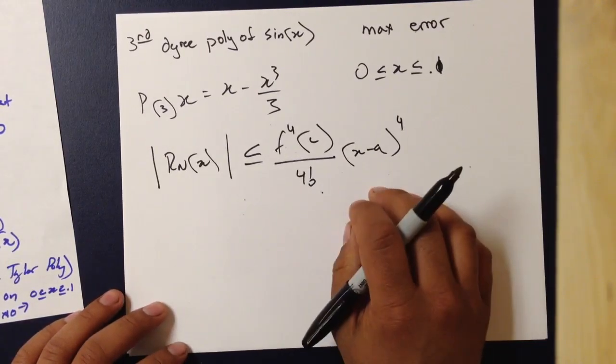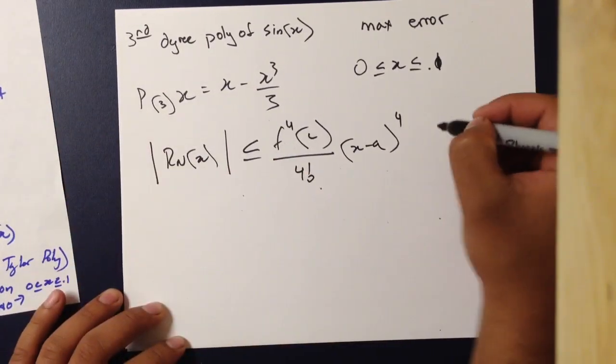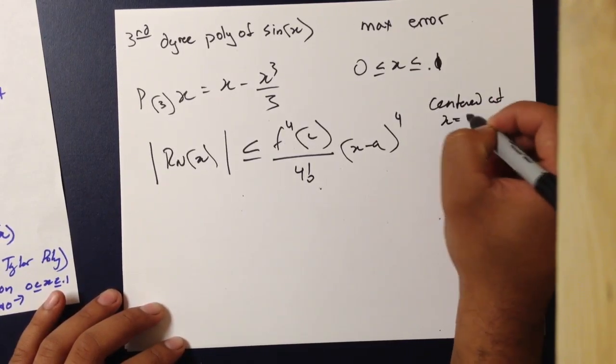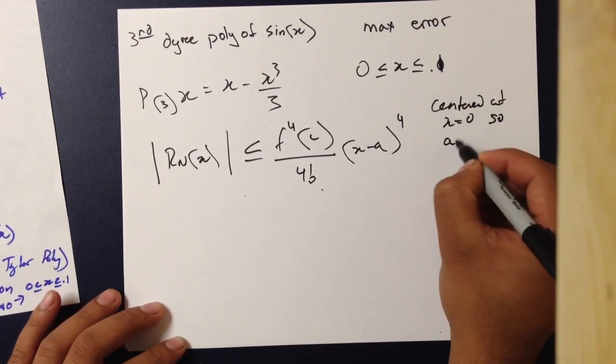We know that this function is centered at x equals 0. So, a equals 0.